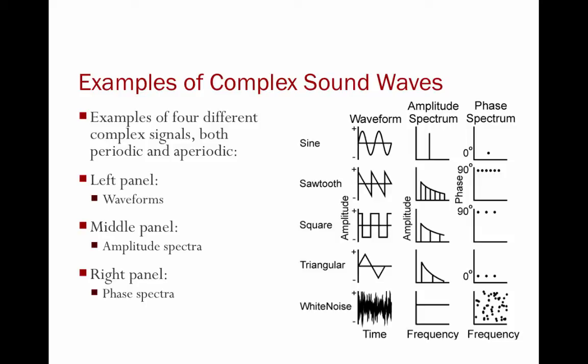A triangular wave also has energy at odd integer multiples. However, the roll-off rate, or the rate at which energy decreases, is steeper. With a triangular wave, the energy decreases by 12 dB with each subsequent harmonic. This is similar to the square wave in that there are odd harmonics, but the roll-off rate is steeper. The sawtooth and square wave have a roll-off rate of 6 dB, while the triangular wave has a roll-off rate of 12 dB. All of the starting phases for the triangular wave are at 0 degrees.